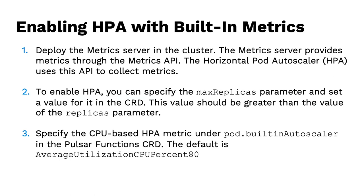To set this up: first configure your metrics server — without it, auto-scaling can't work. Set up the horizontal pod autoscaler as well. To enable it in the CRD, set the max replicas parameter to a value different from your min replicas, which allows scaling up to that ceiling. Specify the metric type; if you don't specify a strategy, the default is 80% CPU utilization.